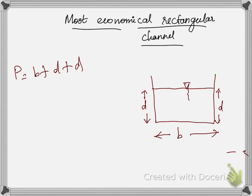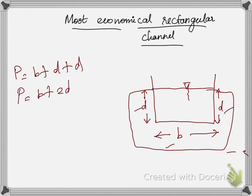Where the water is touching the channel, we call it the wetted perimeter. The water is touching D, B, and D — so the wetted perimeter is B plus D plus D, which equals B plus 2D. The main condition is: when the discharge is going to be maximum, the wetted perimeter should be minimum. To get maximum discharge, we keep our wetted perimeter minimum, and using this condition we derive the most economical rectangular channel.